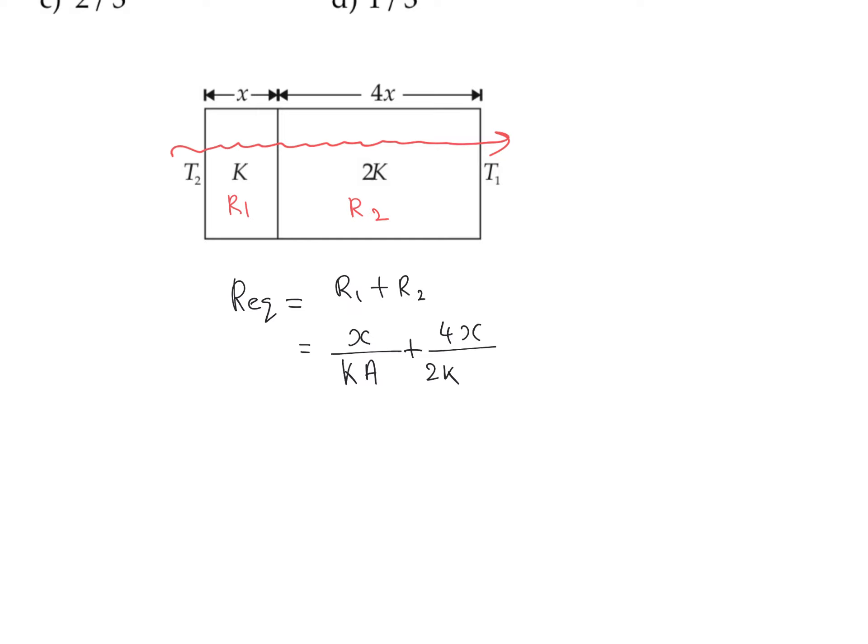2K times A for the second section. The equivalent resistance equals (x/KA) + (4x/2KA) = (2x+4x)/(2KA) = 6x/(2KA). This simplifies to 3x divided by